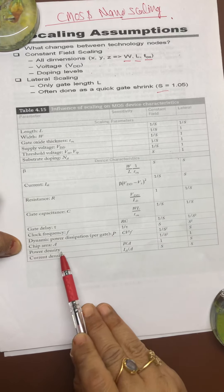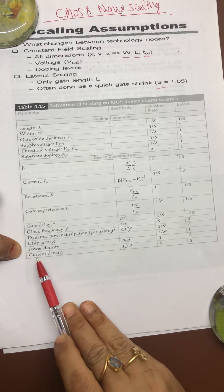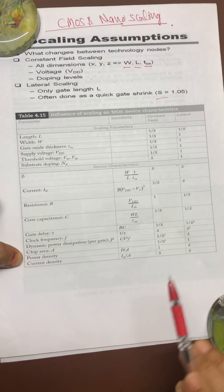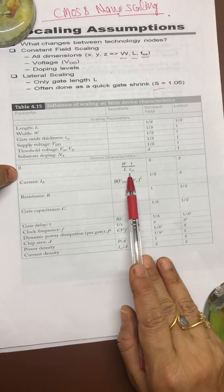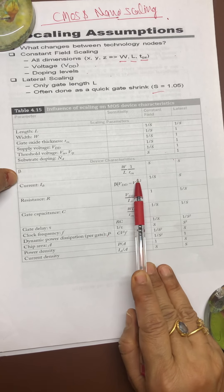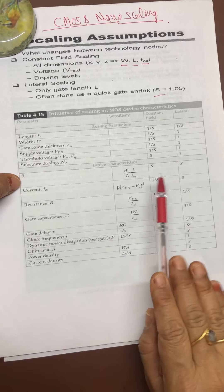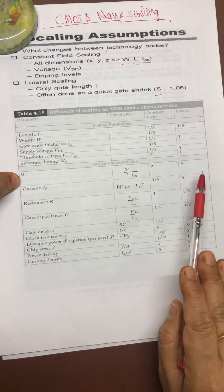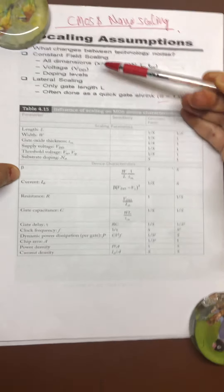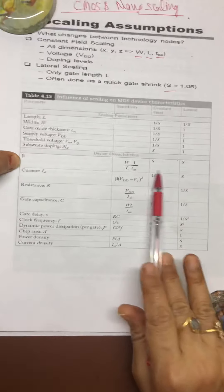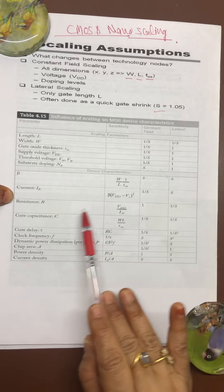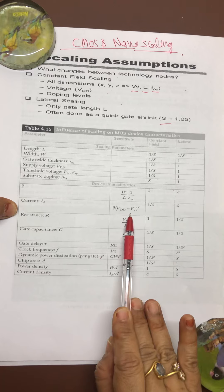Their formulas are: beta is nothing but W by L multiplied by 1 upon T_OX. The scaling factor for constant and lateral field is same as S. For I_DS, the value for the saturation region is beta times (V_DD minus V_T) squared.